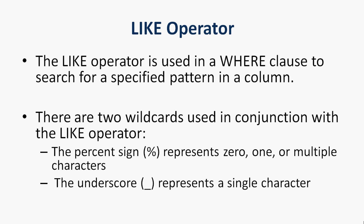The LIKE operator is used in a WHERE clause to search for a specific pattern in a column. There are two wildcards used in conjunction with the LIKE operator. The first one is the % sign, which represents 0, 1, or multiple characters. The second one is the underscore, which represents a single character.